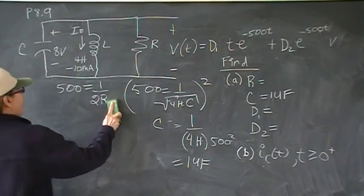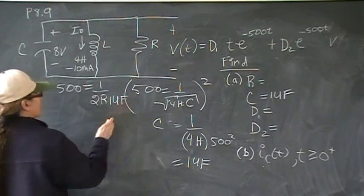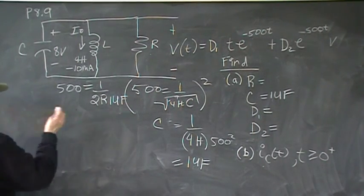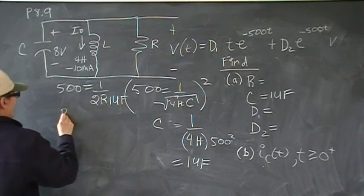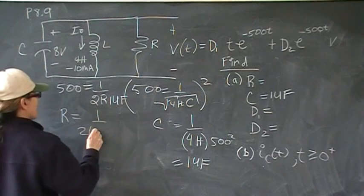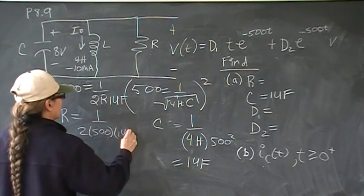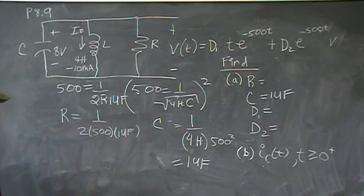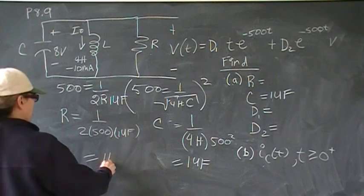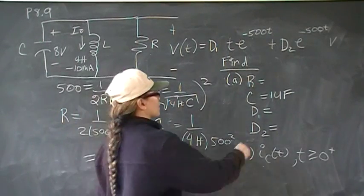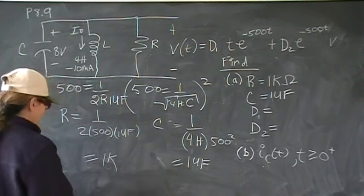So now we have this piece of information and we can solve for resistance. It's going to give us R is equal to 1 over 2 times 500 times 1 micro. Put that into your calculator, and you should come up with 1 kilohm.